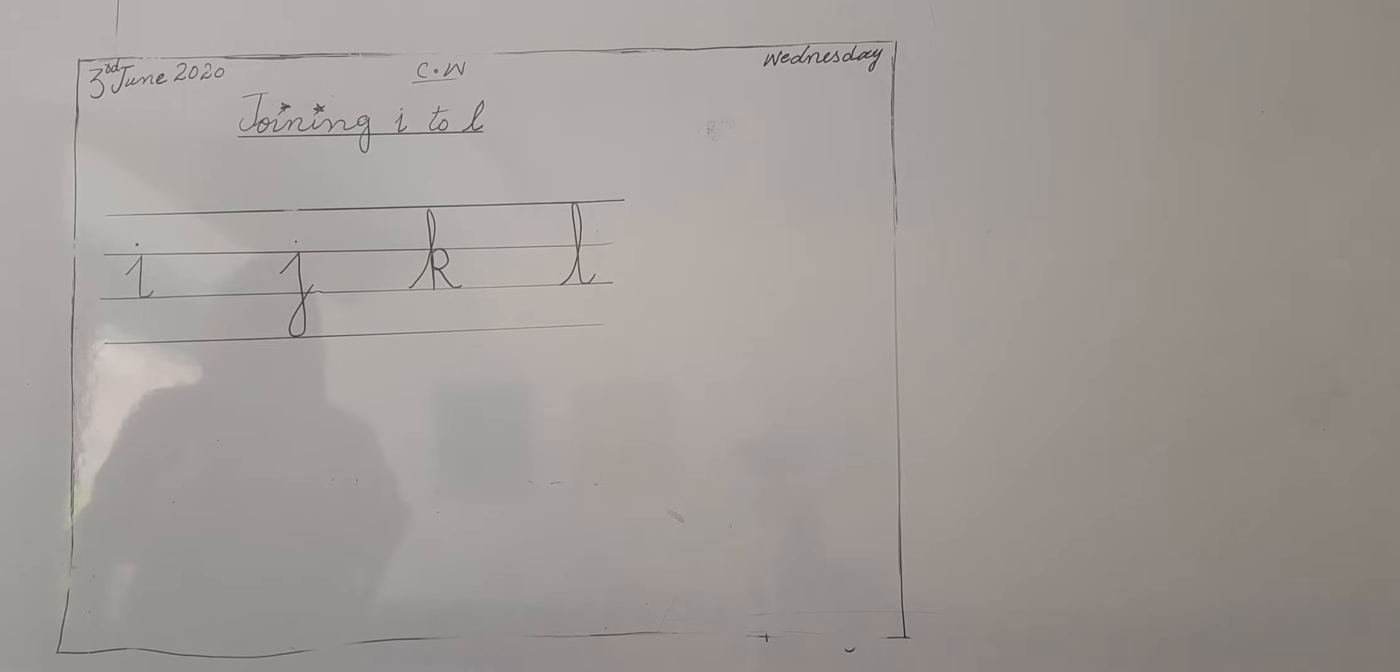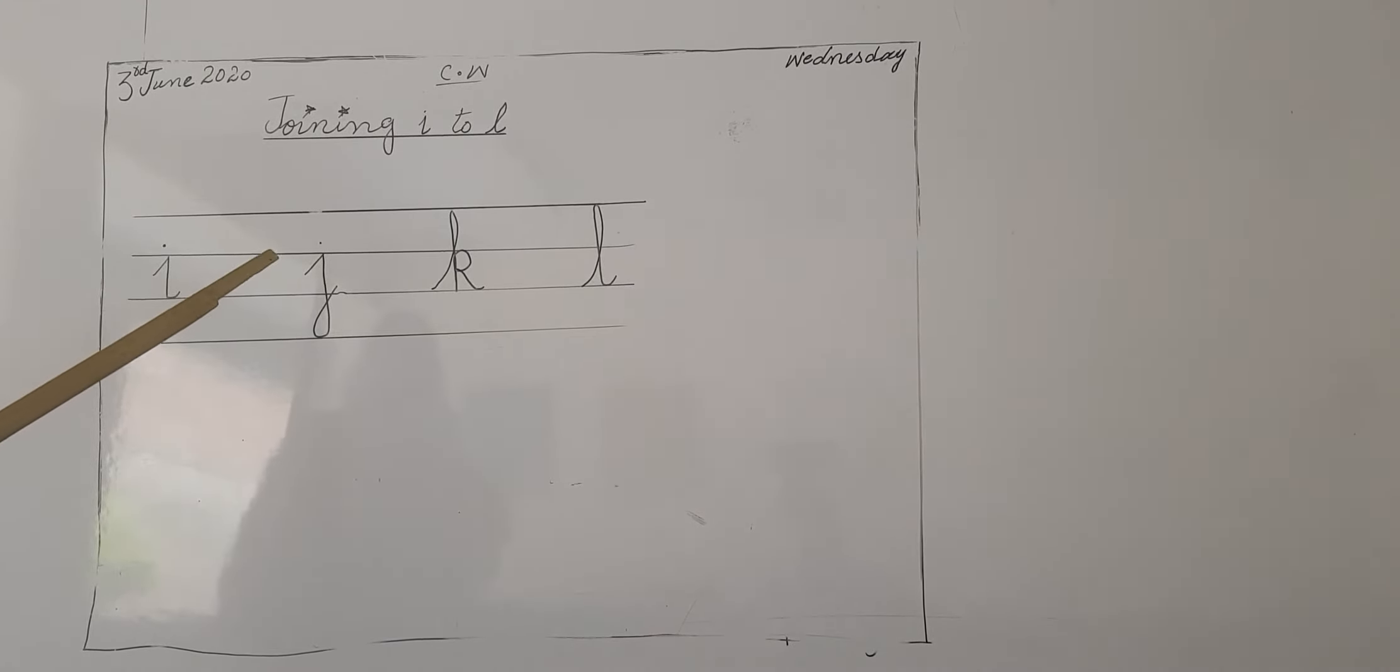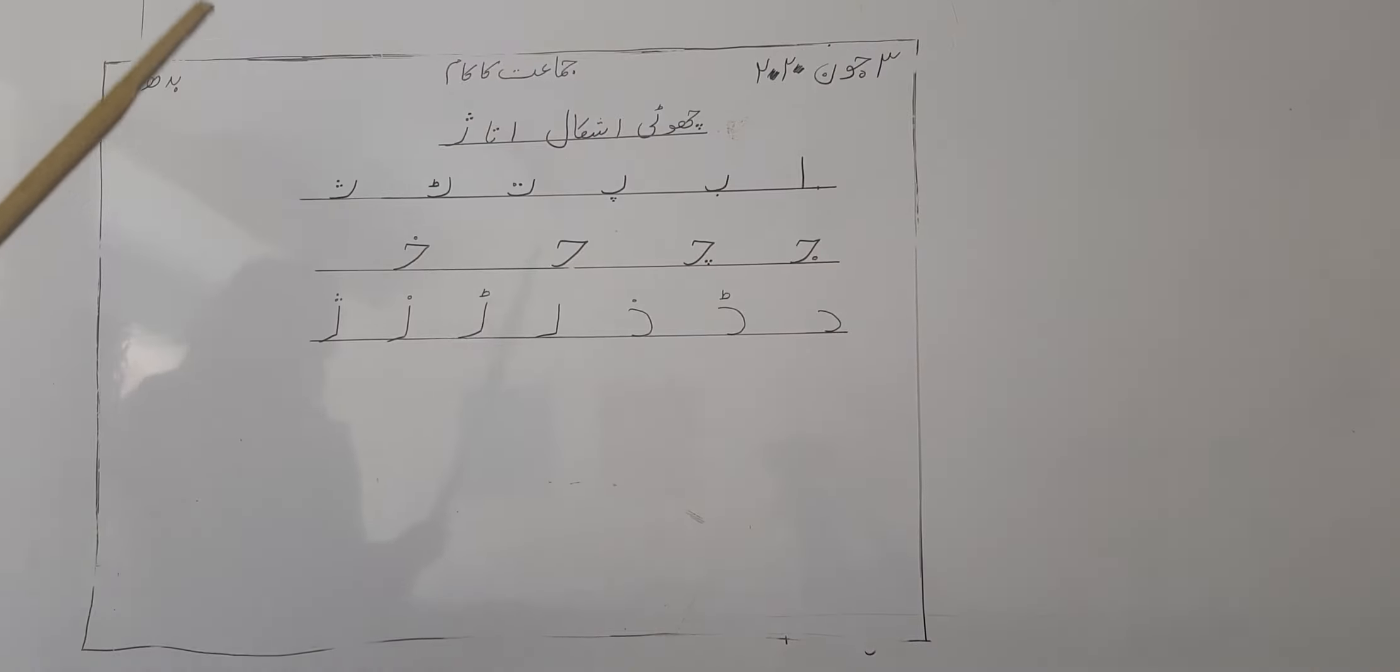Now let's start with sounds. Read with me: I, J, J, J, K, K, L, L. Again repeat. I, J, J, J, K, K, L, L. Zuban ko aapne, tongue, aapne tongue jo hai upper portion of teeth ke aapne lagani hai aur L ki sounds nikalani hai. L, L. J, J.